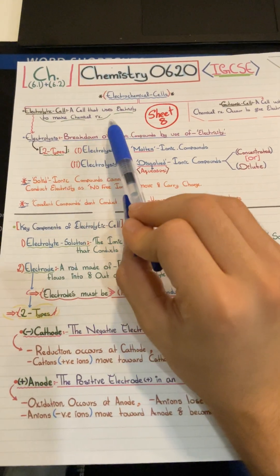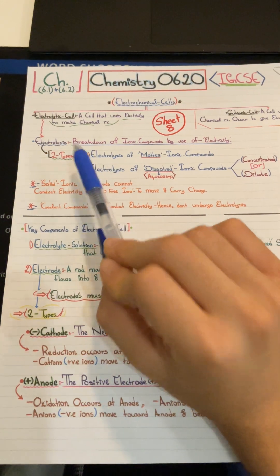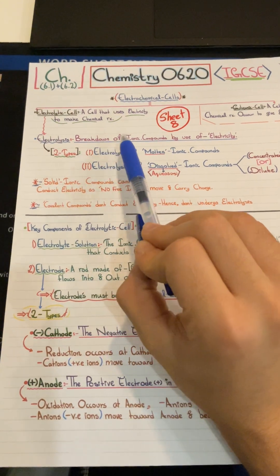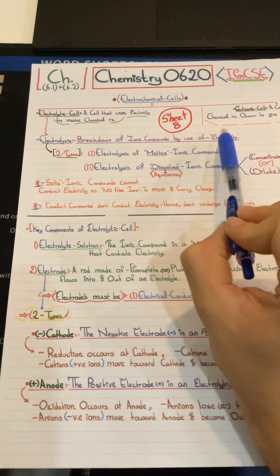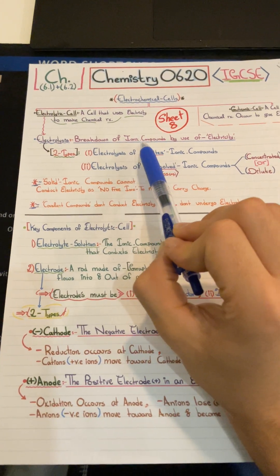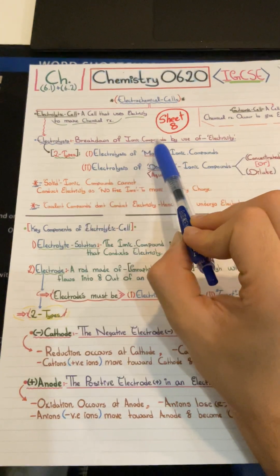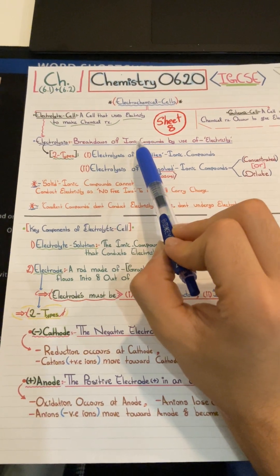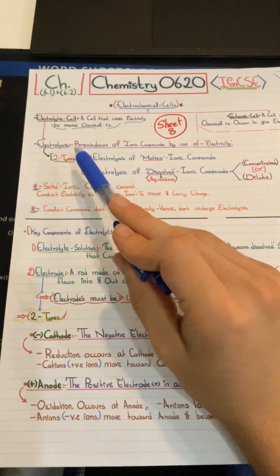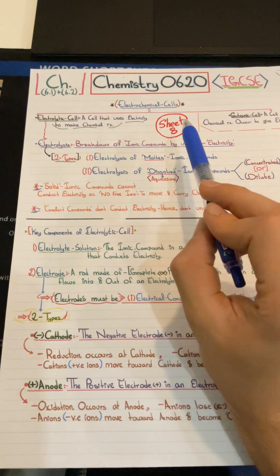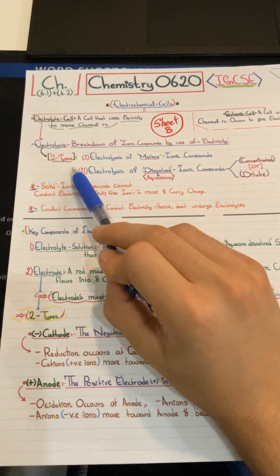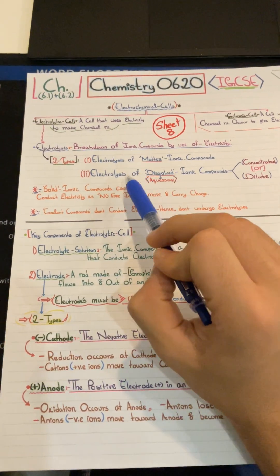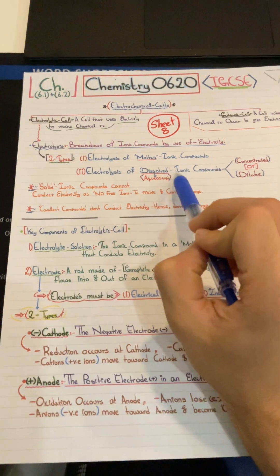Electrolytic cells use electricity to make chemical reactions through electrolysis. Electrolysis is the breakdown of ionic compounds by use of electricity. Ionic compounds are formed by a metal and non-metal with an overall net charge of zero, as positive and negative charges cancel each other out, forming an ionic crystalline lattice. There are two types of electrolysis: electrolysis of molten ionic compounds and electrolysis of aqueous dissolved ionic compounds, which can be either concentrated or dilute solution.